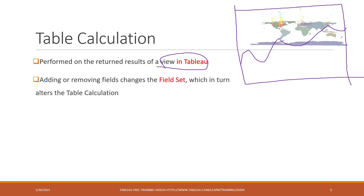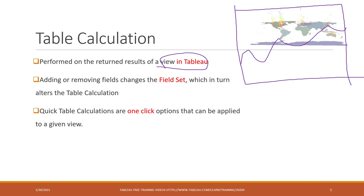When adding or removing fields, you're changing the field set, which will in turn change the result of the table calculation. We also have the quick table calculation — that's a quick option that can be applied to the current view. You can also save the result of quick table calculations, or all table calculations, in a calculated field.